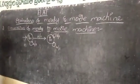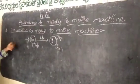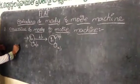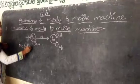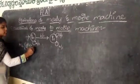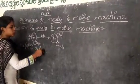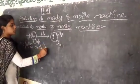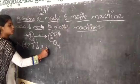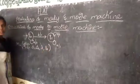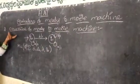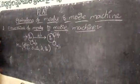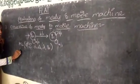So first, if you have 6 tuples, the components are Q, Σ, delta, alpha function, lambda, and Q0. These are the 6 tuples for Moore machine.